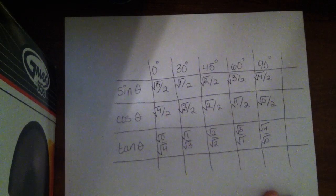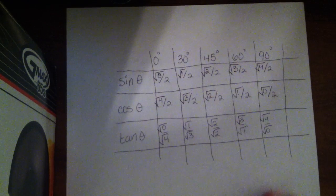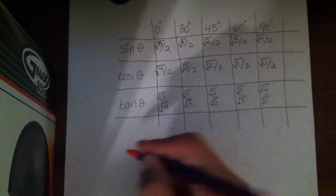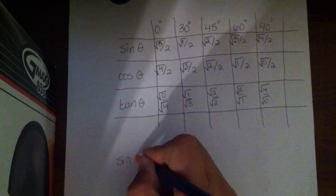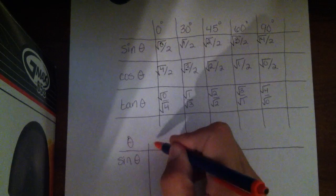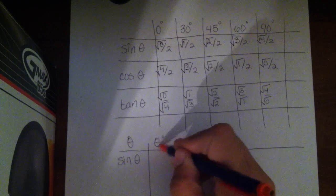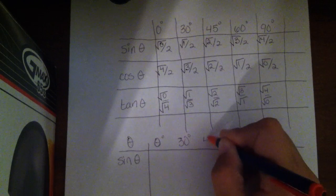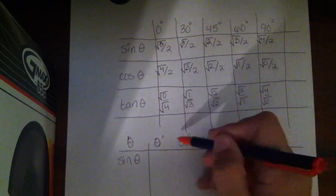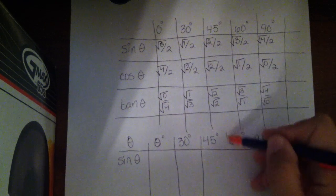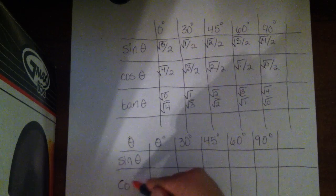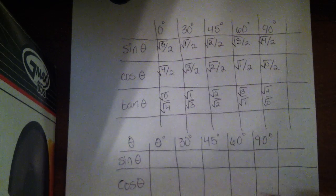I'm going to draw this one more time right underneath, and I'm going to write the final values simplified. So sine of theta, when my theta is 0, 30, 45, 60, and 90. And then we also have cosine and tangent.